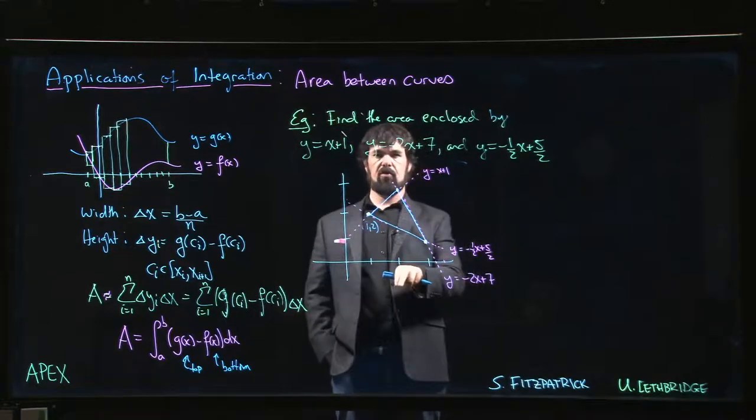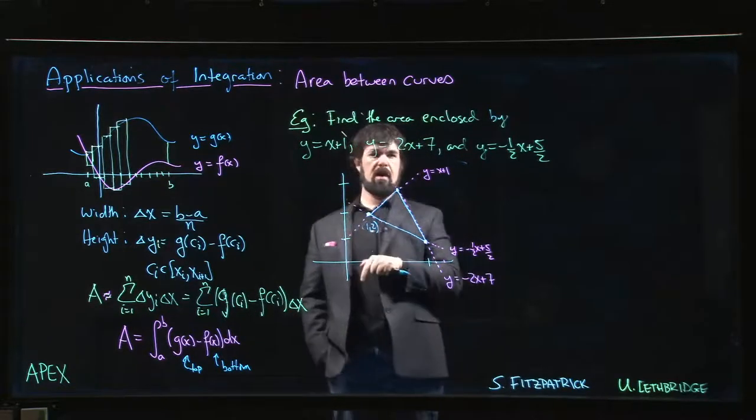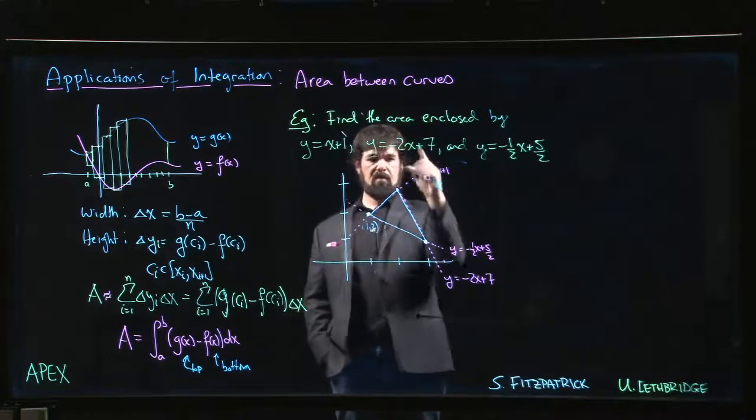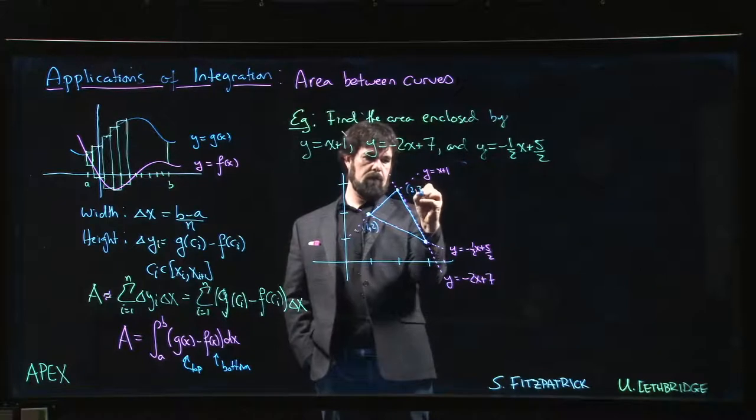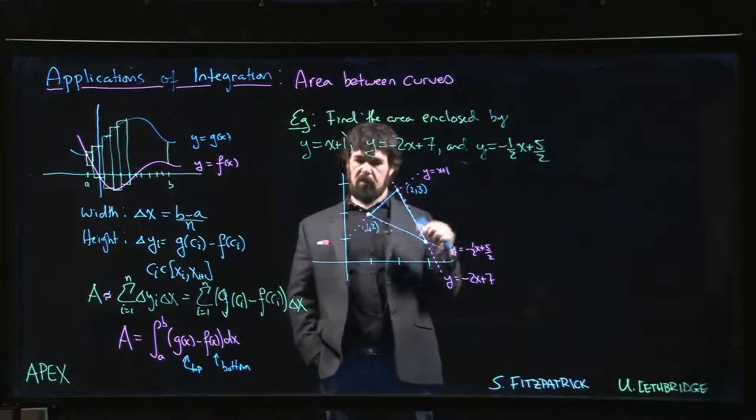If x is equal to 2 I get 3 here and I get 3 here, 7 minus 4. So this is the point 2, 3 and it's the intersection between those two lines.